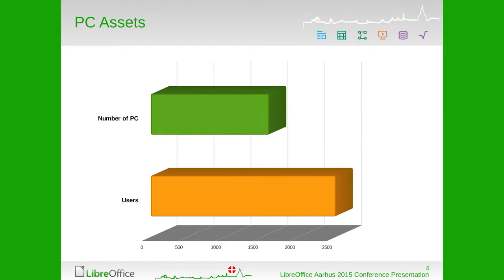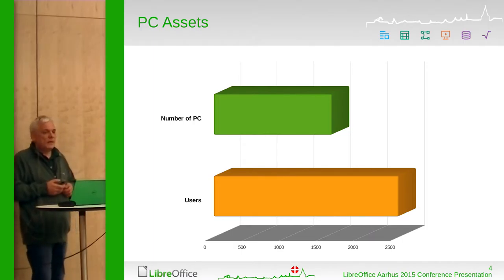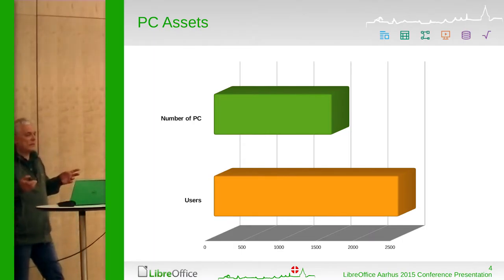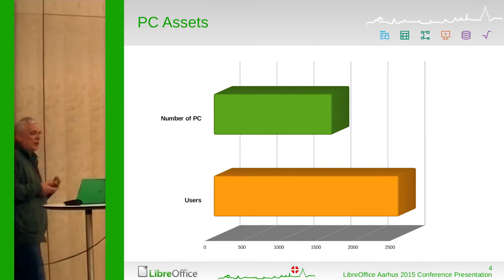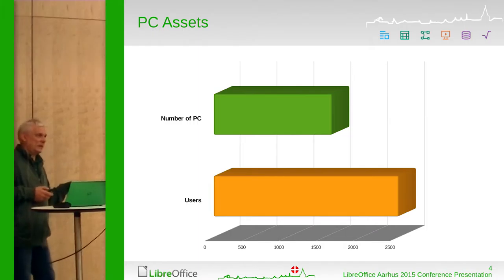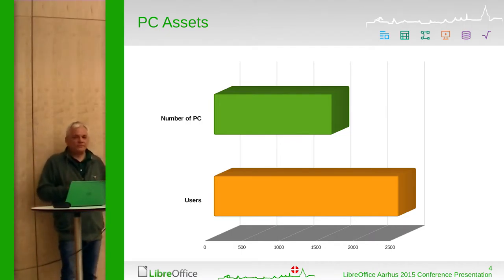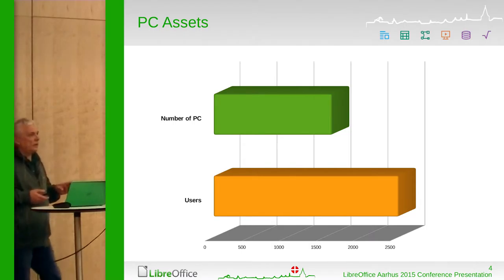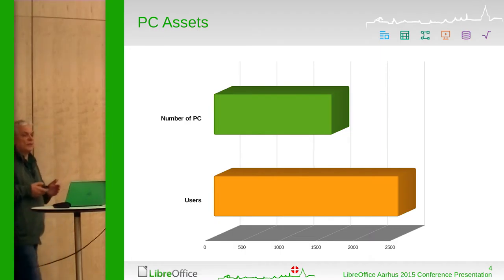This is a situation — a difference between users and PC assets. This chart shows the number of users and PCs in assets. On all PCs, LibreOffice is installed in various versions. The most common is version 4.3.7, still vanilla. While in part of the workstations, Microsoft Office is installed alongside LibreOffice at the same time. In new installations, we used to install only LibreOffice, unless Microsoft Office is required by older software already installed.